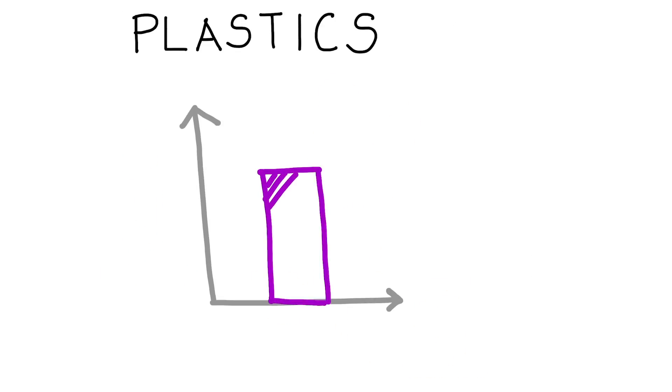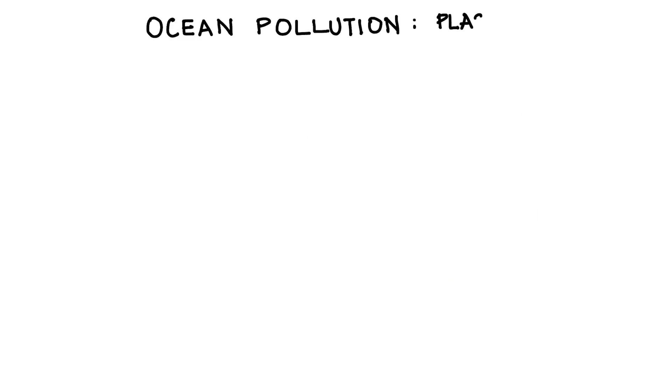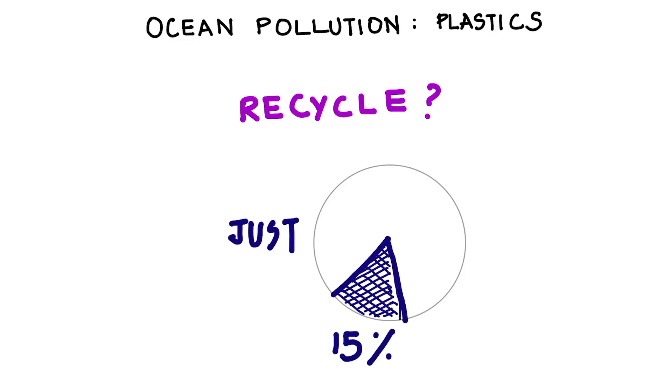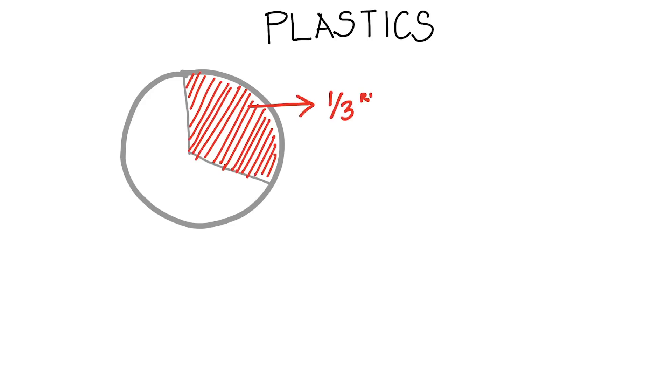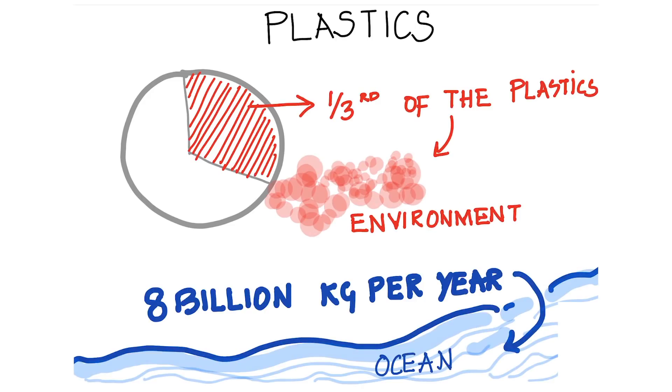One question that comes up is, don't we recycle most of our plastics? Well, unfortunately, 80% of plastic waste entering the ocean comes from countries with high levels of poverty. Globally, we only recycle about 15% of our plastics, and about one-third of all our plastics enter our environment, with 8 billion kilograms of plastic dumped into the oceans each year.